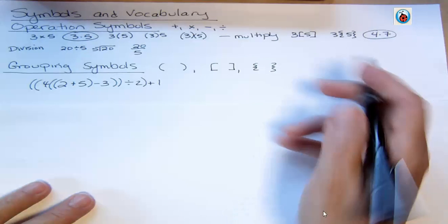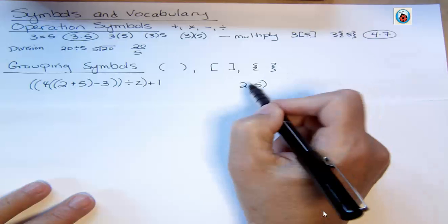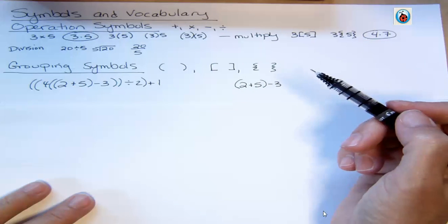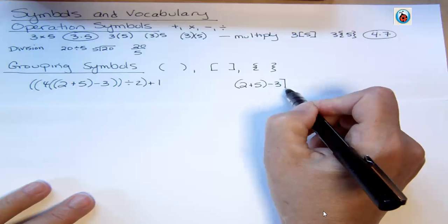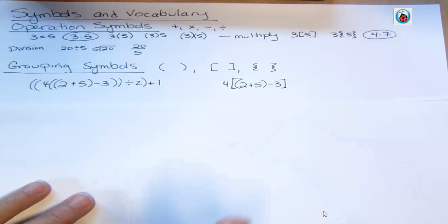So what we can do instead is say, okay, I have 2 plus 5. I would like to subtract 3 from that. But then I'd like to take and multiply that whole thing by 4. So I'm going to use a different symbol to show that it's easier to read.